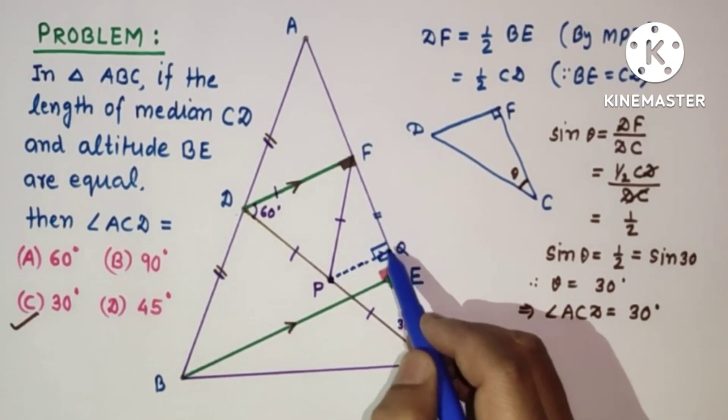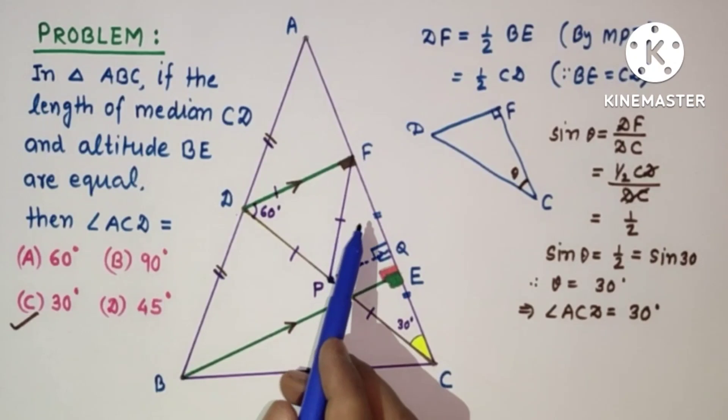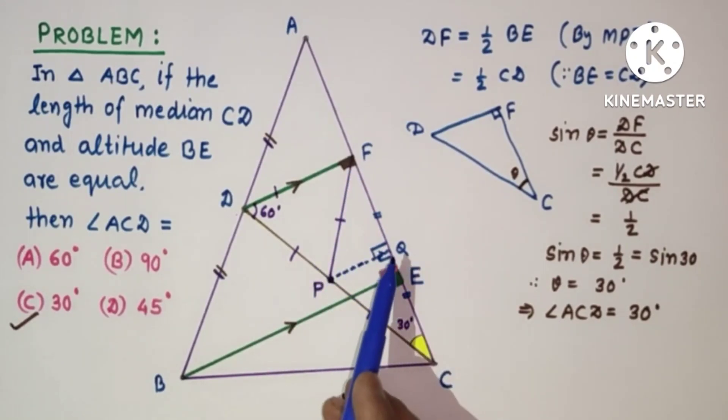Since FQ is equal to QC, and QP is common, this is 90, this is 90, by SAS test these two triangles are congruent.